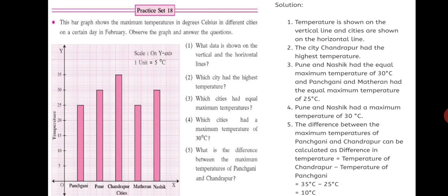Second question. Which city had the highest temperature? Now, look at the graph. Which graph shows highest? The Chandrapur which is 35 degree Celsius. So, they have not asked how much. So, we will just name the city. Which city? The city Chandrapur had the highest temperature.